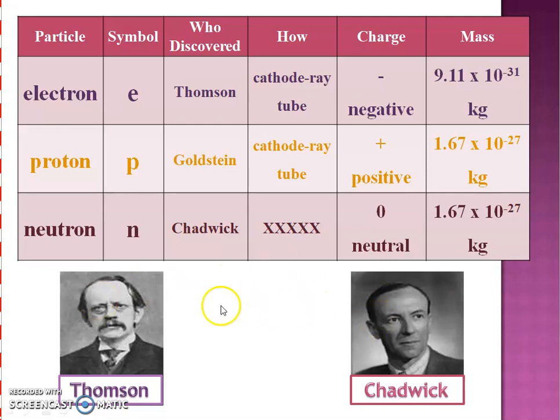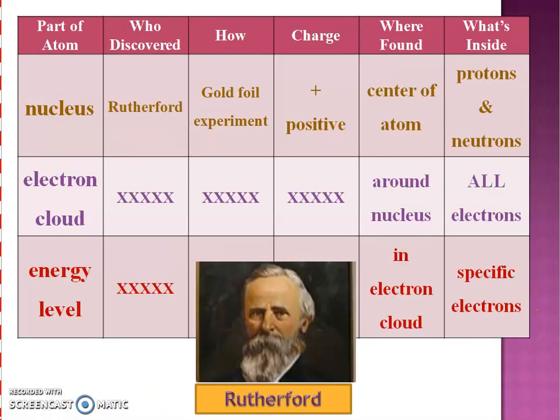We have the nucleus, and inside the nucleus we have two subatomic particles, the neutron and the proton. And in our electron cloud we have all the electrons, but we're going to talk about specific energy levels having specific electrons. So pause the video, fill in the chart. And down here I just like to have pictures, so hopefully you've paused and wrote down all the information. I like to have Rutherford there just to show you who these people are. It's nice to always have a face with a name.